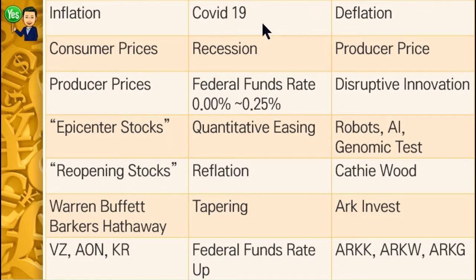Let's start from the story. At the end of 2019, COVID-19 was found and it started to spread globally. People got infected by the virus and became sick. Some people lost their lives. Each country started to lock down the border, and stores and businesses closed. That's what we call a lockdown economy. The lockdown caused by the pandemic made the economic condition go down — that we call a recession.